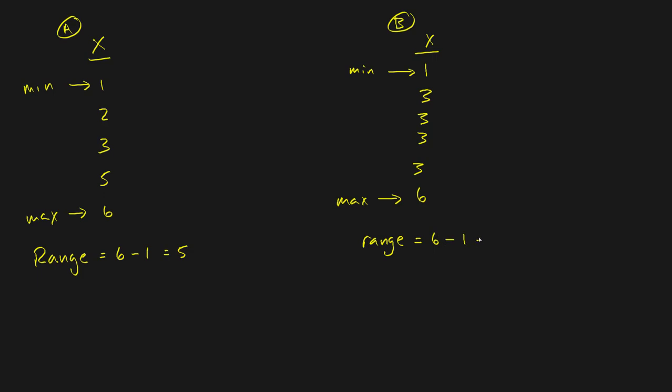The range here would be six minus one equals five. The range in group B would be six minus one equals five. But that would be like saying that they both have exactly the same amount of variation. Now that's not quite true - it's true that they do have the same range, but look over here at A. If we were to draw out this distribution, it would look exactly like this.